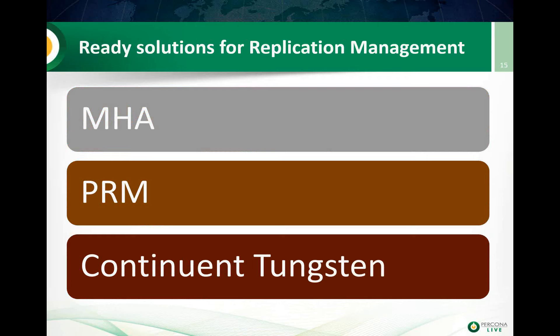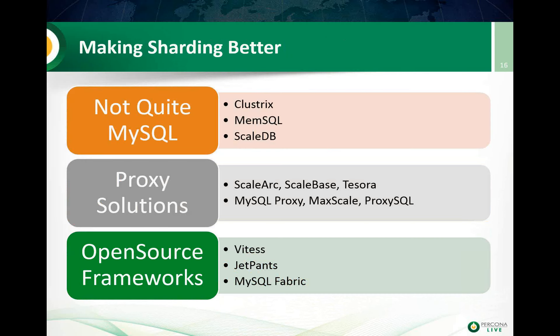Beyond availability, there are also many new solutions for replication management — how you do failover or utilize slaves for reads. We have tools like MHA and PRAM, third-party solutions like Tungsten which simplify replication management, and work from Oracle on MySQL replication utilities which are great tools for replication if you use MySQL 5.6 with GTIDs.